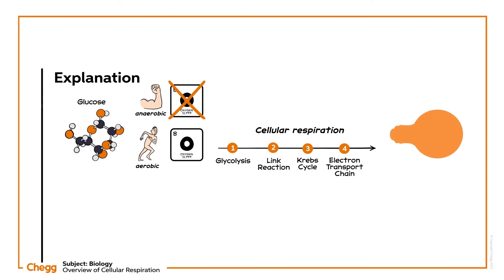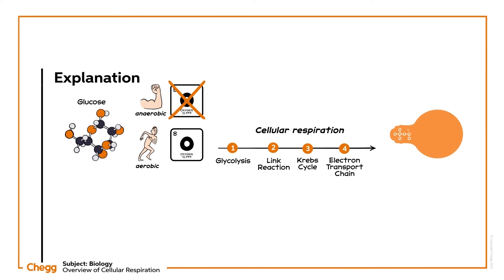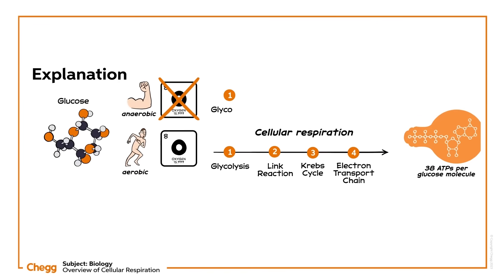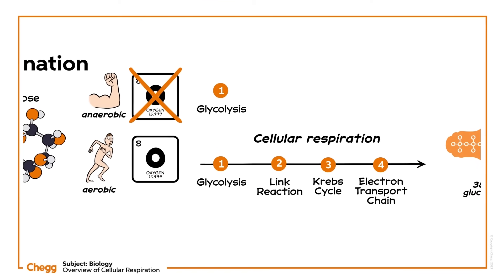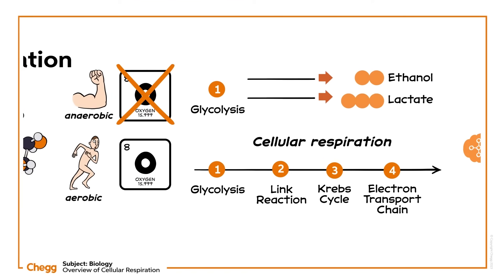This process results in the production of 38 ATPs per glucose molecule, but it's a very lengthy procedure. The link reaction, Krebs cycle, and electron transport chain aren't present in anaerobic respiration. Glycolysis still happens, but results in the production of lactate or ethanol instead of ATP.